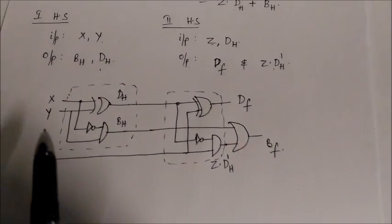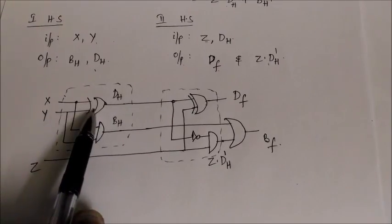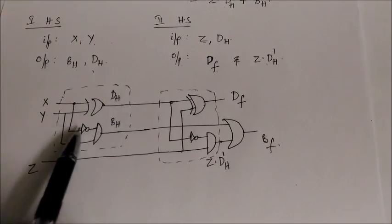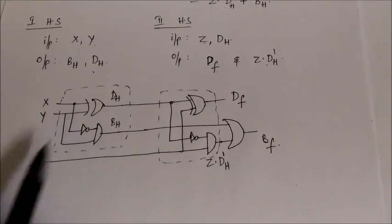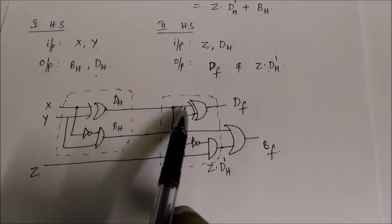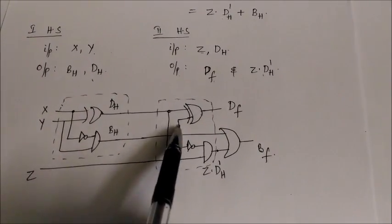So here if you see the circuit diagram, x and y are the inputs for both XOR gate and also borrow. So here dh is this and this is x bar y, that is bh. And the second half subtractor inputs are as we specified, z and dh. This is dh and this is z.